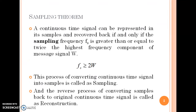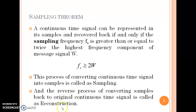Now let us see what is the sampling theorem. It states that a continuous time signal can be represented in its samples and recovered back if and only if the sampling frequency Fs is greater than or equal to twice the highest frequency component of the message signal W — that is, Fs ≥ 2W. The process of converting a continuous time signal into samples is called sampling, and the reverse process of converting samples back to the original continuous time signal is called reconstruction.